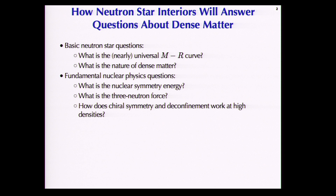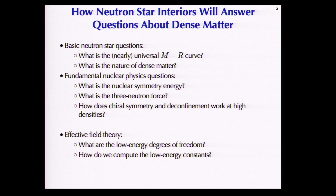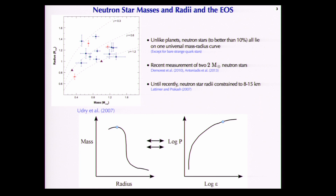Focusing back on this question of dense matter, maybe the correct framing is to think about it in the context of an effective field theory. The question becomes: what are the relevant low-energy degrees of freedom, and what is the correct effective field theory description of neutron star matter as a function of density at different locations in the neutron star? And once we establish this low-energy EFT, how do we compute the low-energy constants?